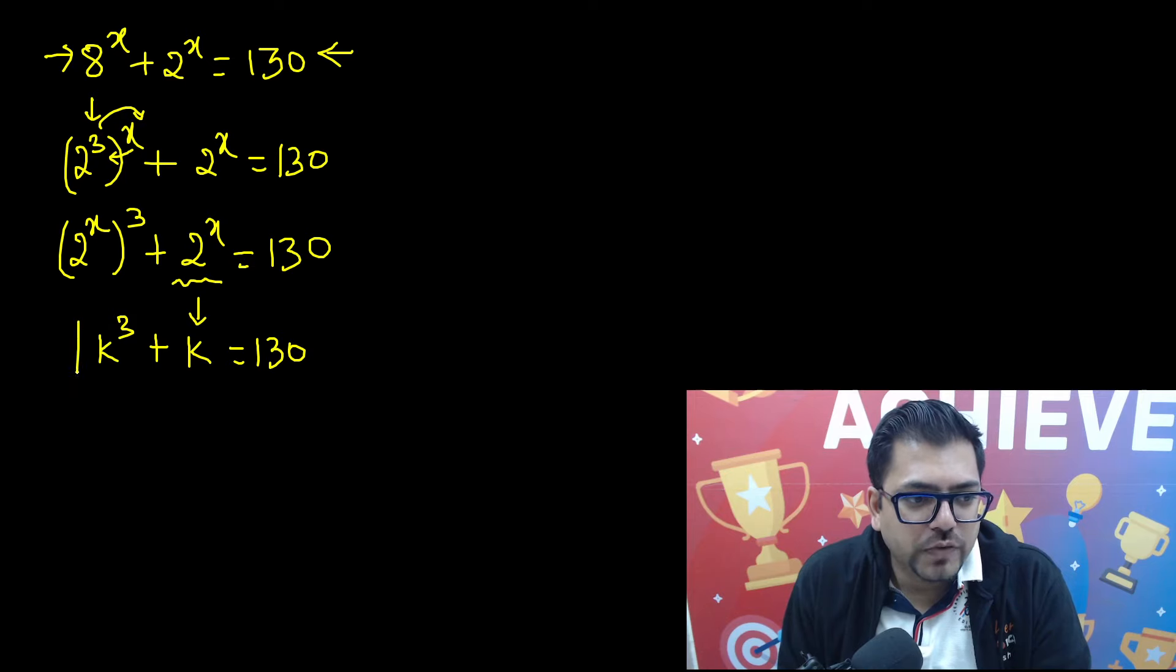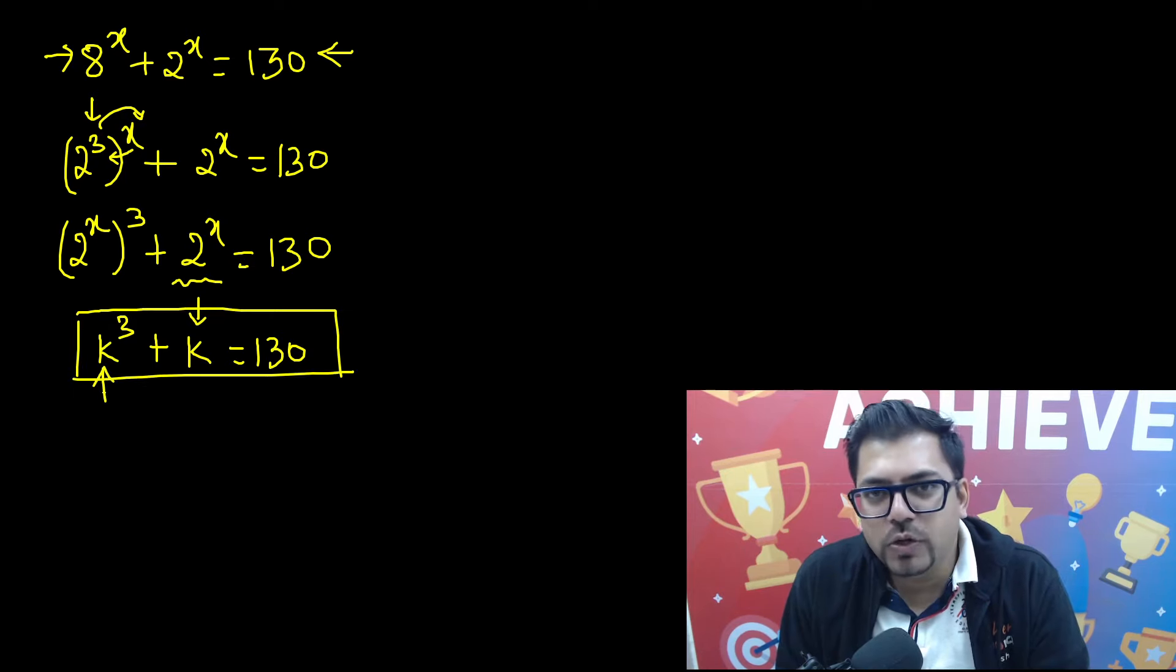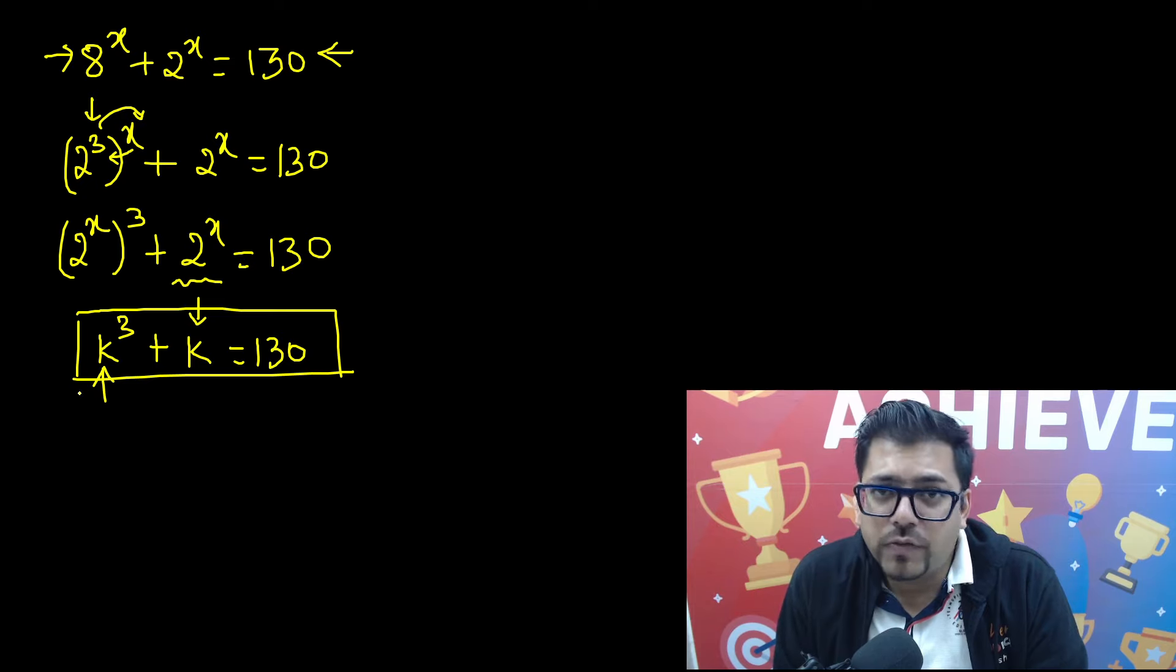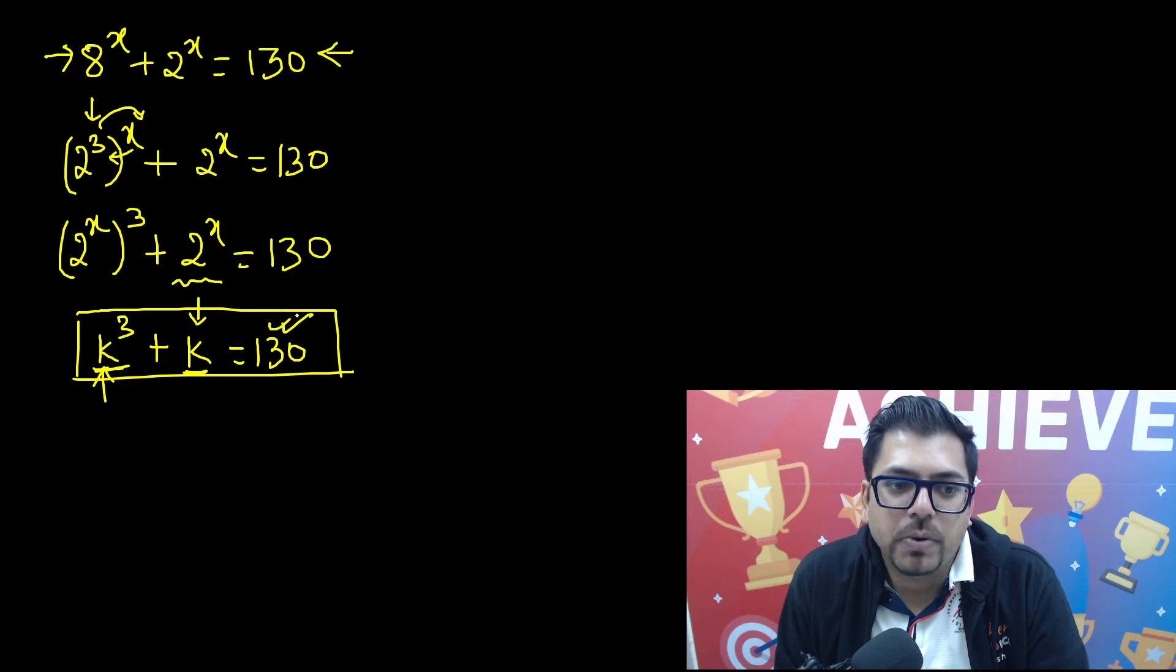First of all, let's try finding it out. If I put the value of k as negative, obviously it's not going to be useful for me because both the powers are odd—3 and 1—so a negative number will give me a negative number overall, and we need a positive number output. So we'll put positive numbers.